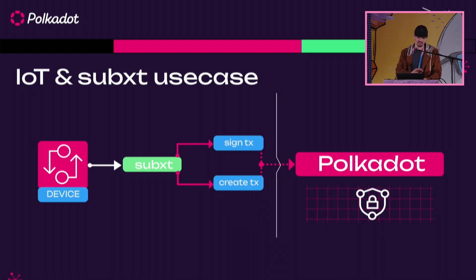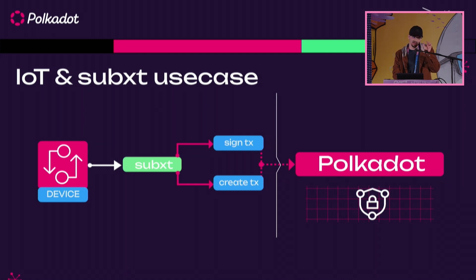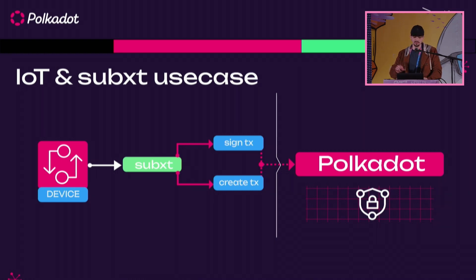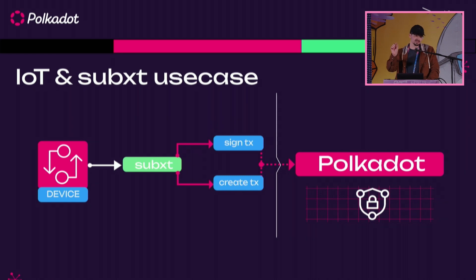For a fun use case: using an ESP32 — a very tiny chip — you can compile Substrate libraries onto that chip to create transactions, encode them, sign them, and send them to a Substrate-based chain. So you have direct transactions being created from a tiny chip, sent up to a parachain, which then gets finalized by Polkadot. You can really guarantee the state of many different things because the tooling is so diverse.